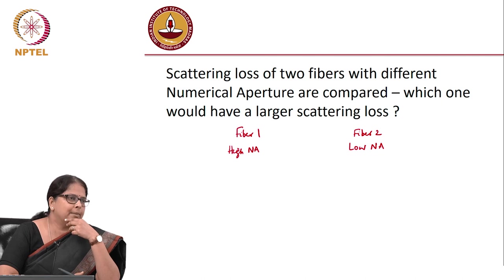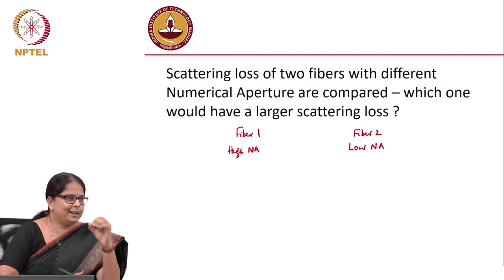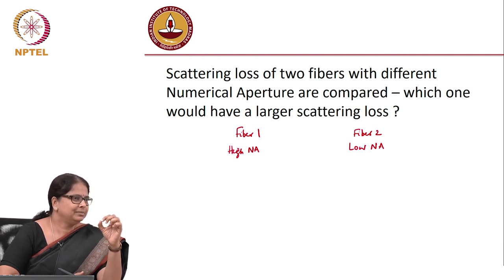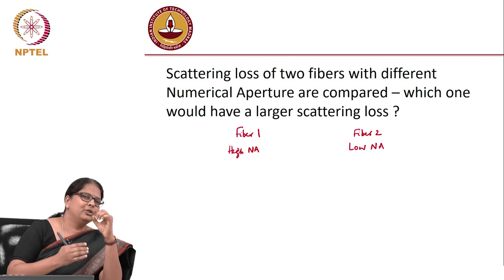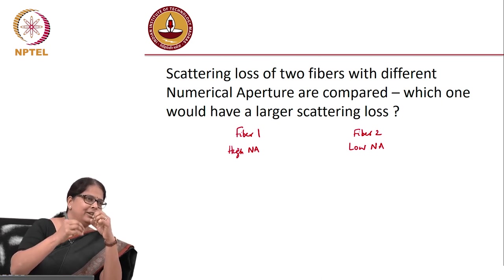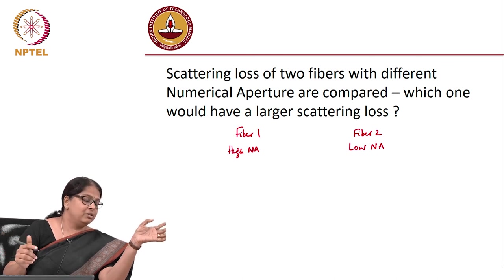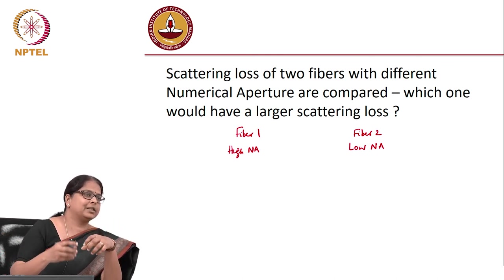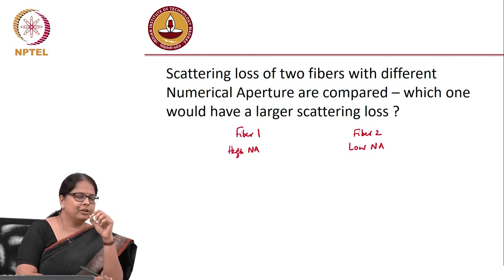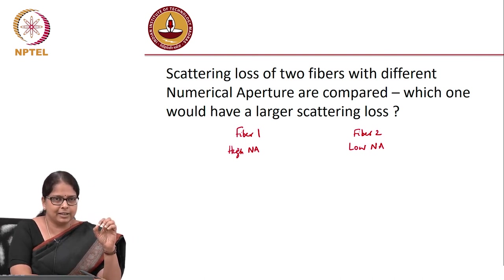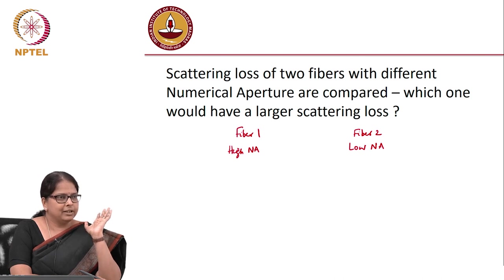In a standard fiber, the core refractive index is increased and the cladding refractive index is decreased through doping. For a specialty fiber where the core is undoped, the reasoning may differ. But for regular fibers, high NA means large loss due to the higher dopant concentration required in the core.